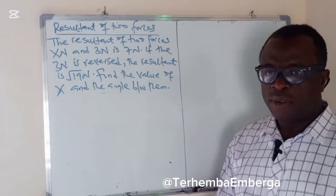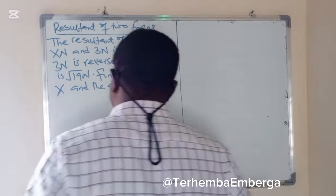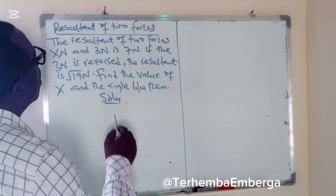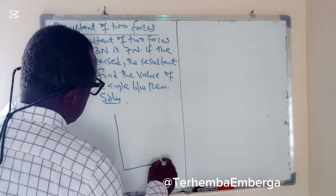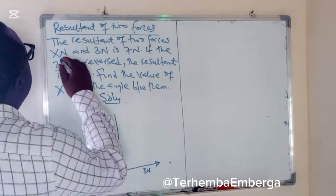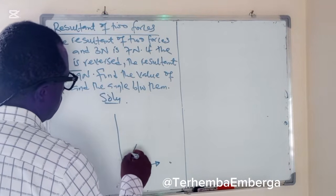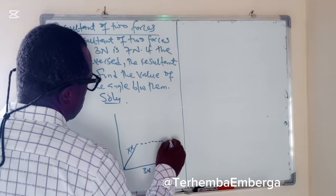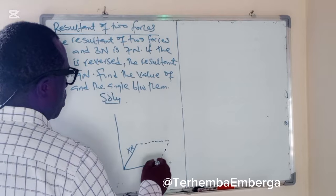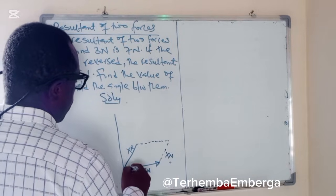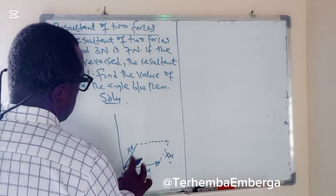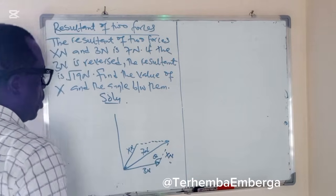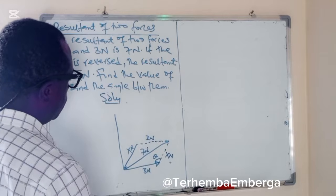This seems to be complex, but it's not. We may sketch it and then see how we can solve it. If these are reference points, then we have the 3N and the XN — we can represent this way, and this is also XN. Then the resultant is 7 Newton, and this is the angle between them. So this is also 3N and this is the angle.